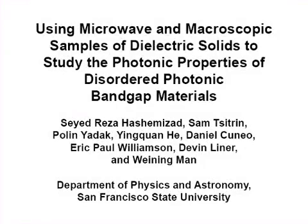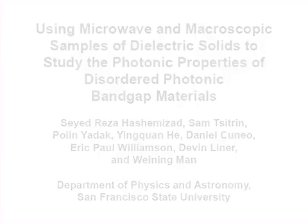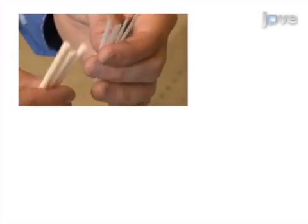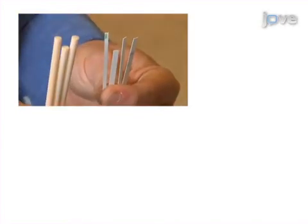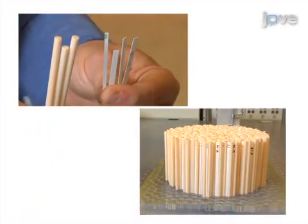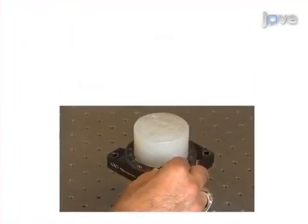The overall goal of the following experiment is to use microwave scale samples of dielectric solids to study the photonic properties of disordered photonic bandgap materials. This is achieved by constructing test samples made with dielectric components inserted into a 3D printed base template with holes and slots arranged to form particular ordered or disordered patterns.